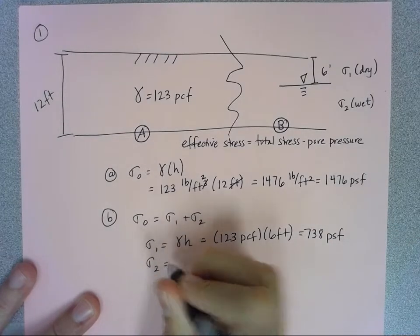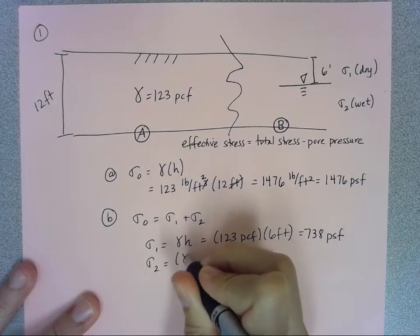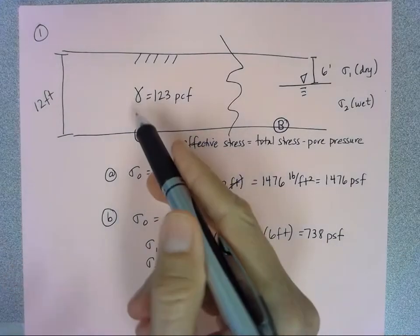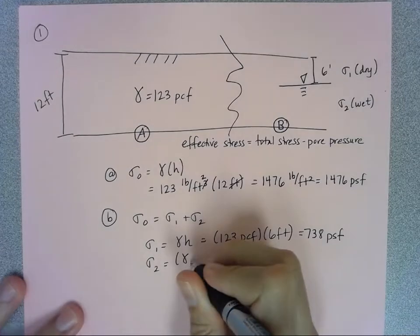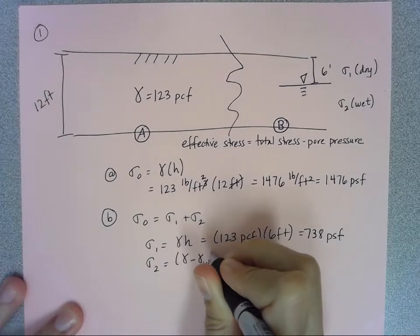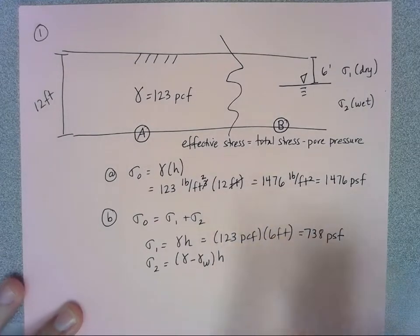And then I also have a sigma two here which is going to be my gamma. I'm just calling a gamma here because I don't know if it's clay or whatever, but I have to subtract the gamma water from that and then multiply it by the h.